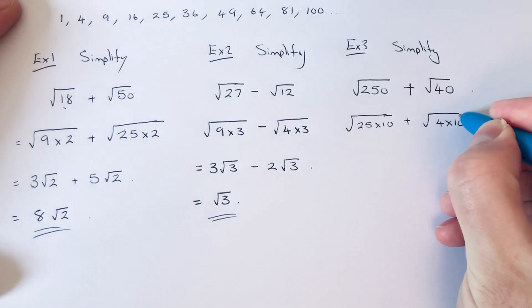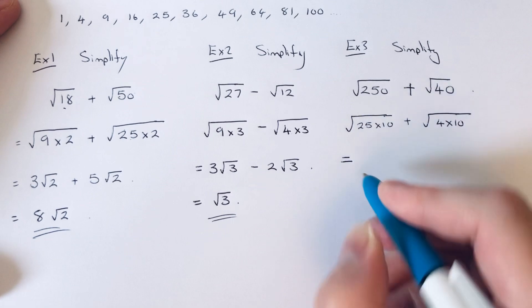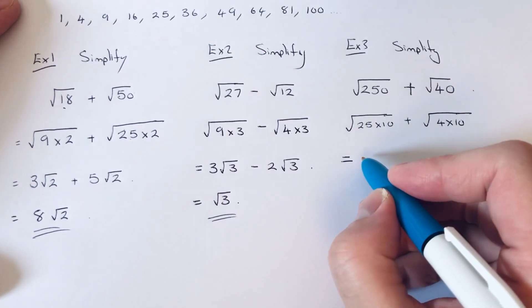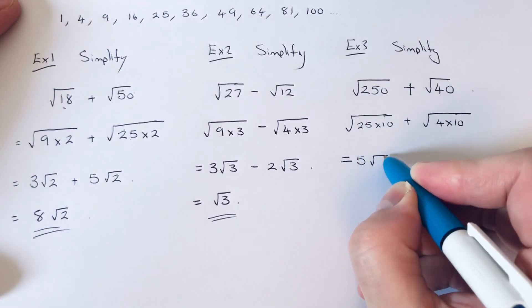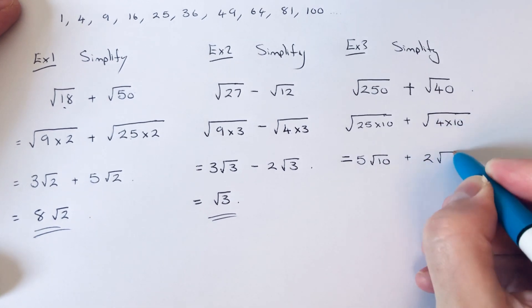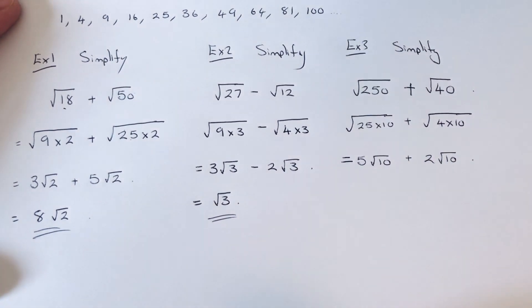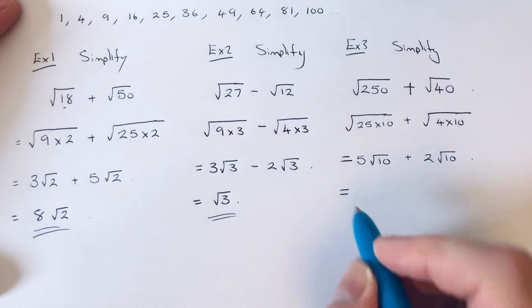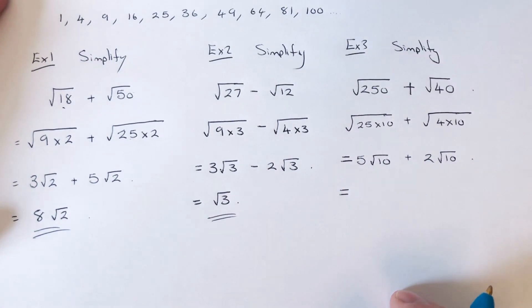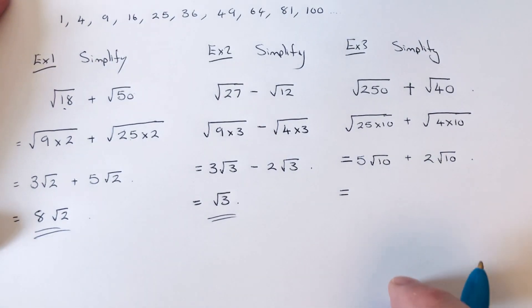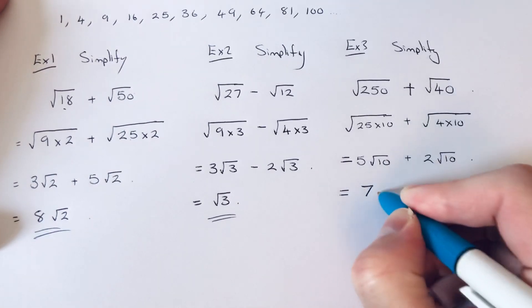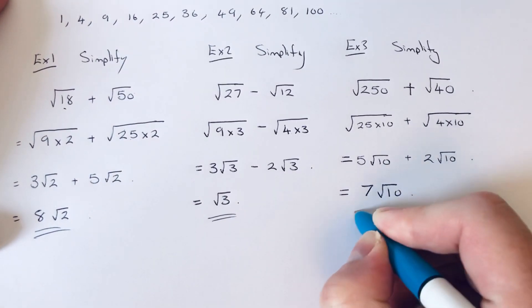Square root of 25 is 5 but we can't square root the 10. Square root of 4 is 2 but we can't square root the 10. So we've made the third the same so we can now add these together. So 5 root 10 and 2 root 10 is 7 root 10.